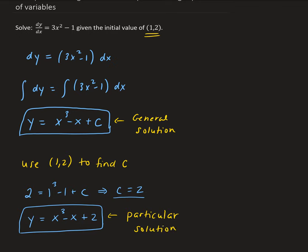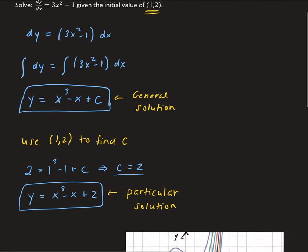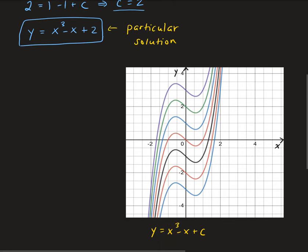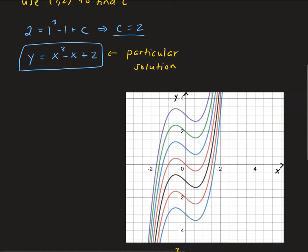Going back to the general solution, remember C could be any value. So you end up getting a family of curves that have a similar graph to x cubed minus x. Basically, this is just x cubed minus x, but it's shifted down or up depending on the value of C. Here's a sample of some of the general solutions.